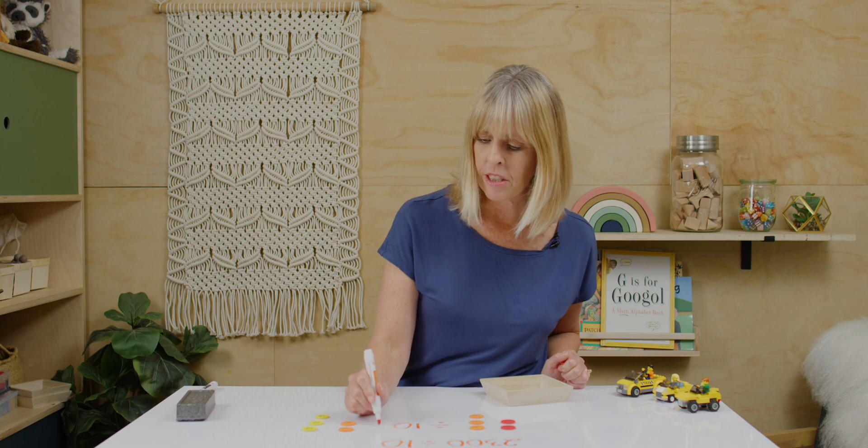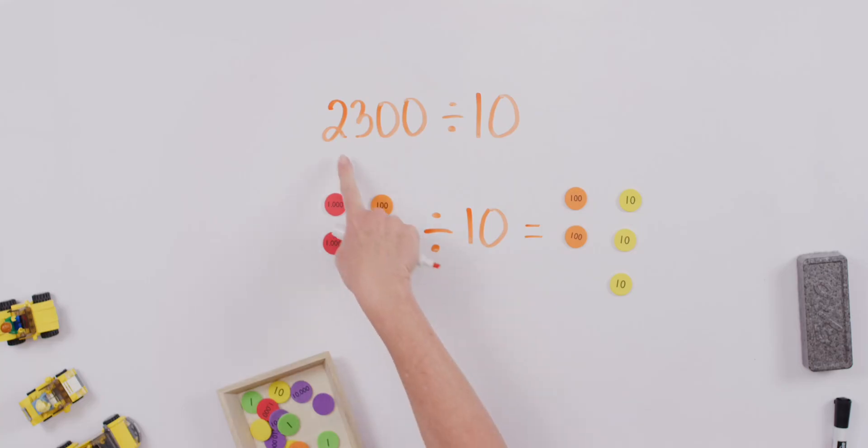So we have our answer over here. 2,300 divided by 10 is going to give us 200 and 10, 20, 30. So 230.